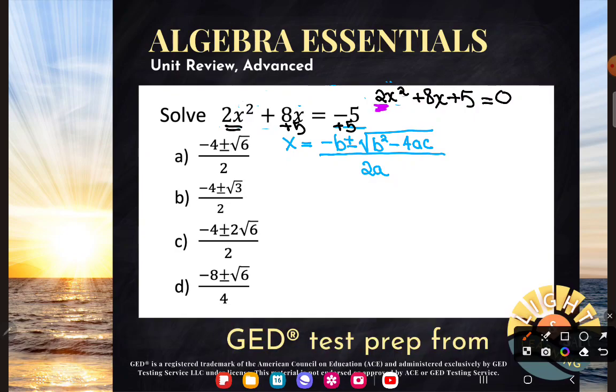My a is my number multiplying with the square term. My b is my number multiplying with my plain old variable, my plain old x. And my c is my constant. So in this case, a is 2, b is 8, and c is 5. And they're all positive.